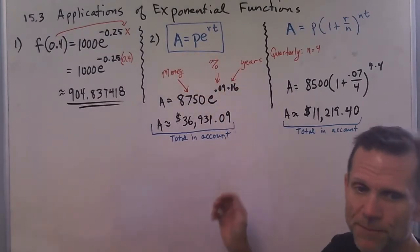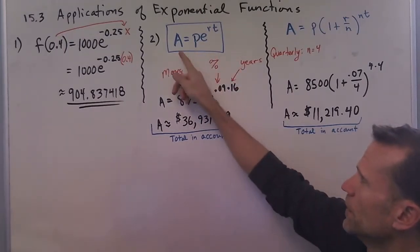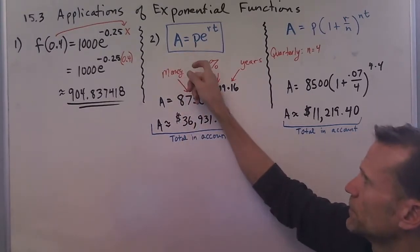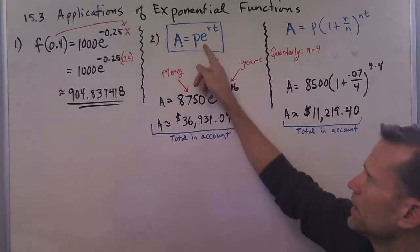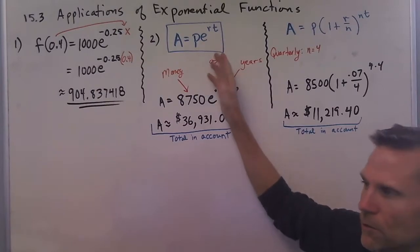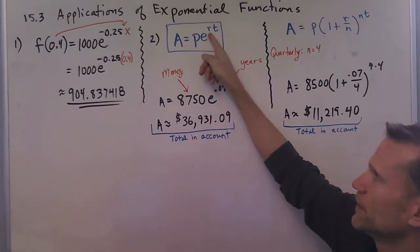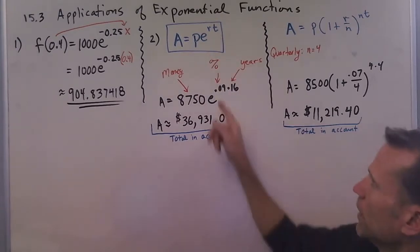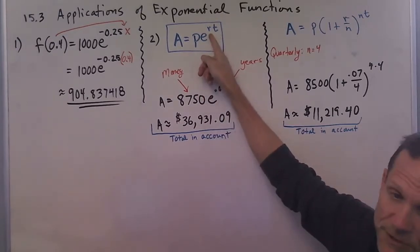P stands for the principal or the money. E is Euler's number, which is about 2.71 or 2.72. Then r is the rate in decimal form, and t is the time in years. The rate is often given as a percent, then you have to write it as a decimal.